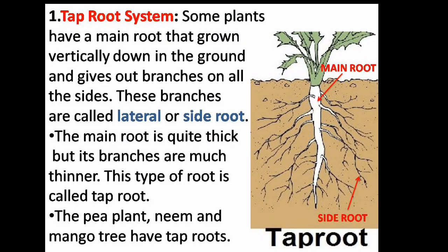In the tap root system, some plants have a main root that grows vertically down into the ground and gives out branches on all sides. These branches are called lateral or side roots. The main root is quite thick but its branches are much thinner. This type of root is called a tap root. The pea plant, neem, and mango tree have tap roots.